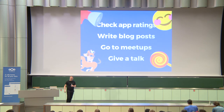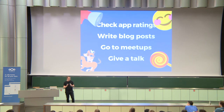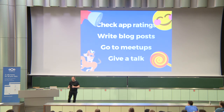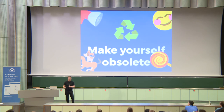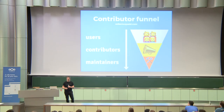The last step is telling everyone. Check app ratings, see what people say, write blog posts about it, go to meetups — not only Nextcloud meetups, but JavaScript meetups, PHP meetups, anything — and give a talk there, not only at the Nextcloud conf. That's basically how you make yourself obsolete. Come to the workshop later today. And if you want another perspective, there's a great blog post and talk by Mike McQuaid of GitHub and Homebrew on a very similar topic — check that out.